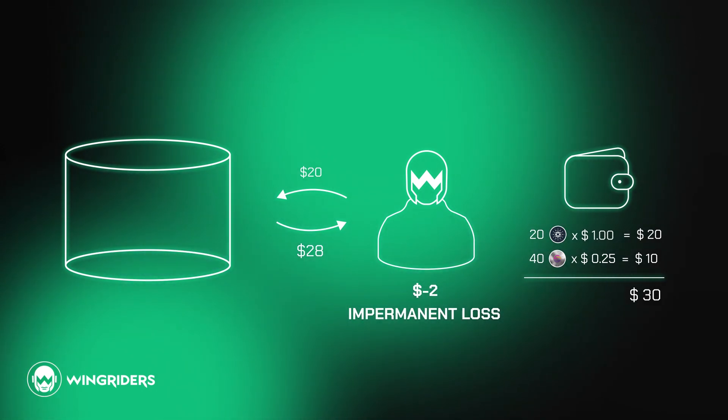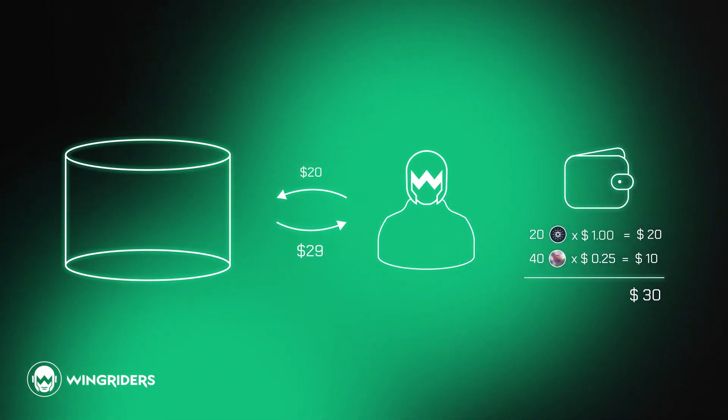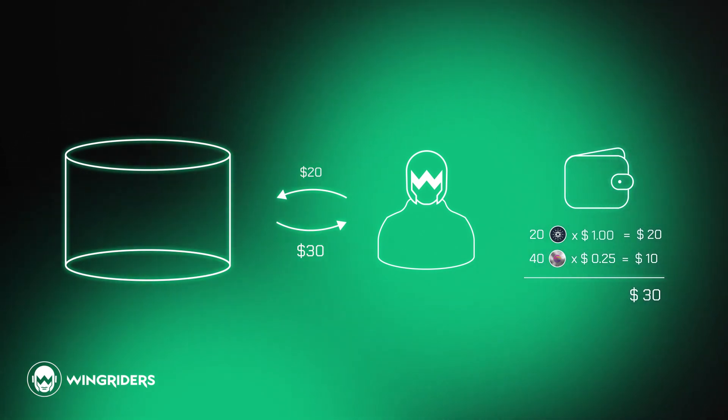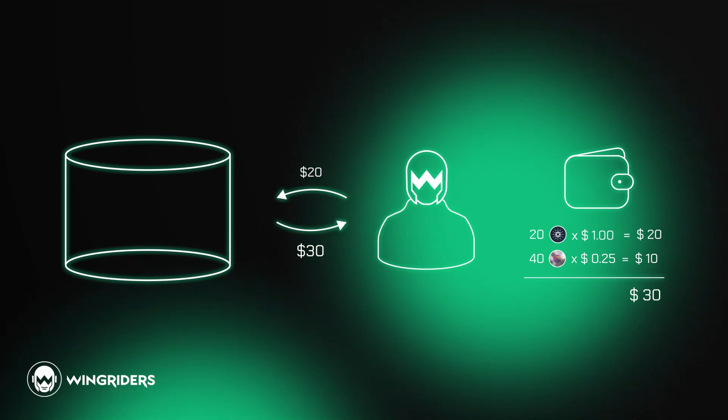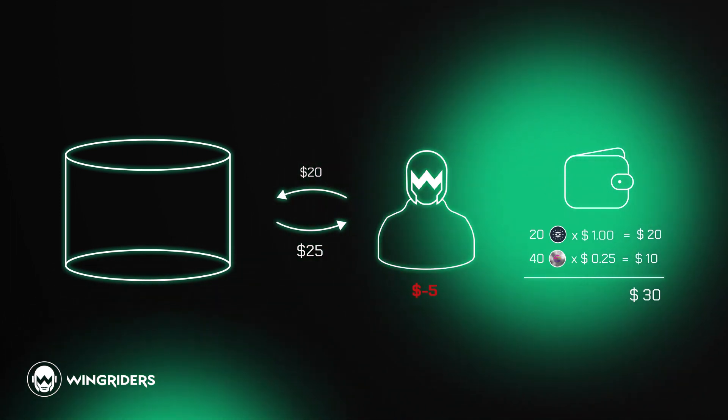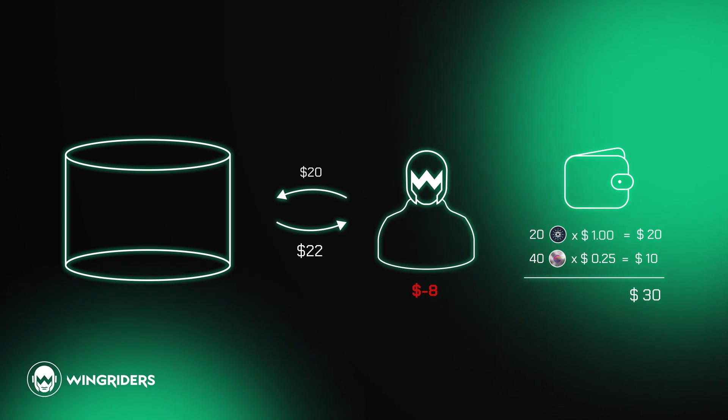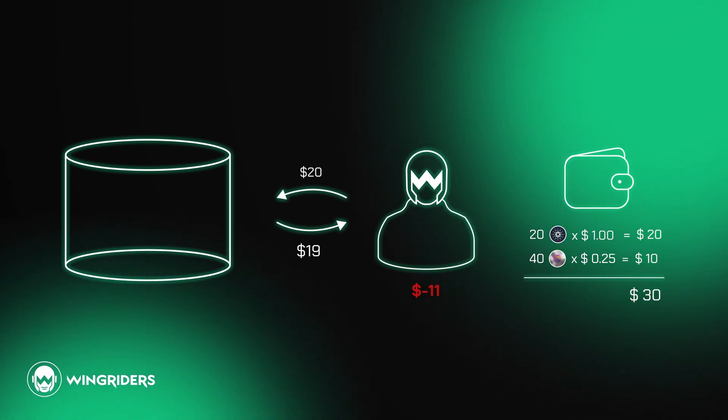You can still keep the ADA and WMT in the pool and wait for the value of ADA to come back to what it was when you deposited it, and then the impermanent loss will come back to zero. The greater the volatility of the assets in the pool, the greater impermanent loss you're potentially exposed to.